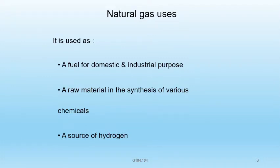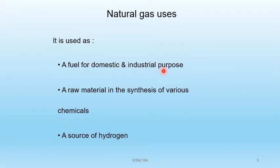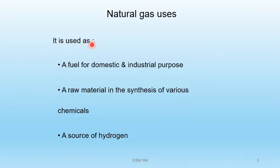Uses of natural gas: it is used as a fuel for domestic and industrial purposes — in our kitchens and in industries. It is also used as a raw material in the synthesis of various chemicals, and it is a source of hydrogen.